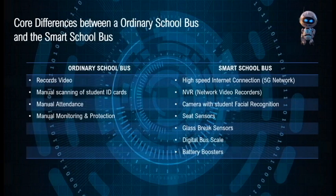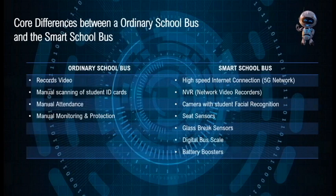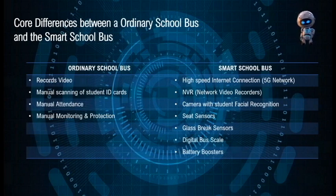Core differences between an ordinary school bus and the smart school bus: An ordinary school bus consists of recorded video, manual scanning of student ID cards, manual attendance, manual monitoring, and manual protection. A smart school bus consists of high-speed internet connection or 5G network, NVRs or network video recorders, cameras with student facial recognition, seat sensors, glass break sensors, a digital bus scale, and battery boosters.